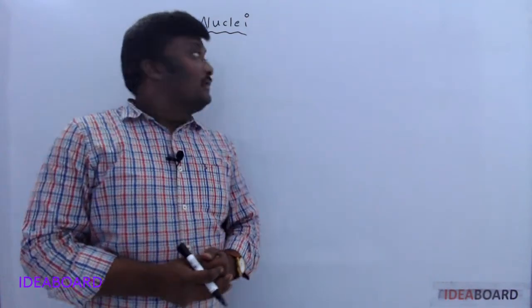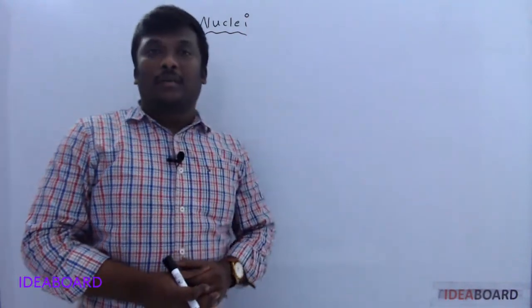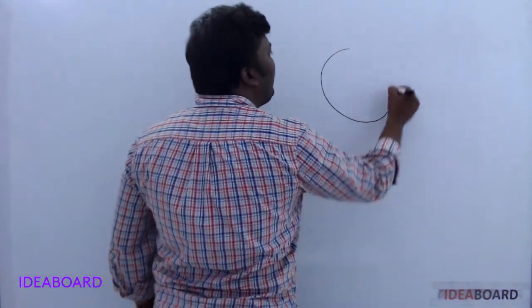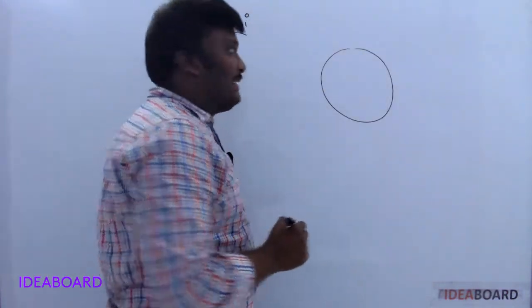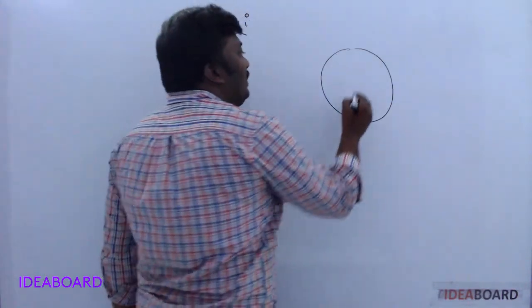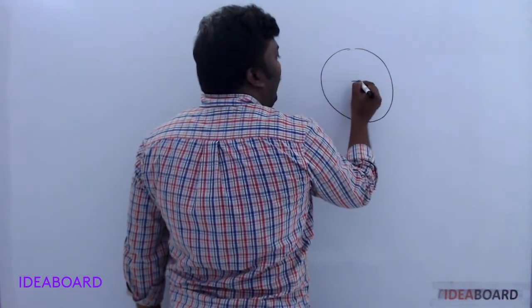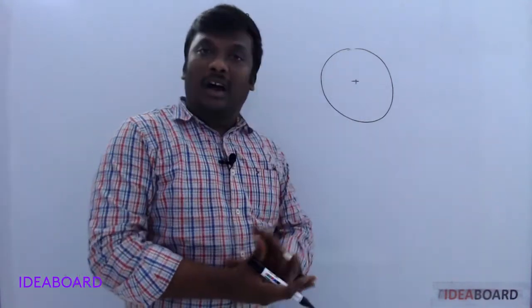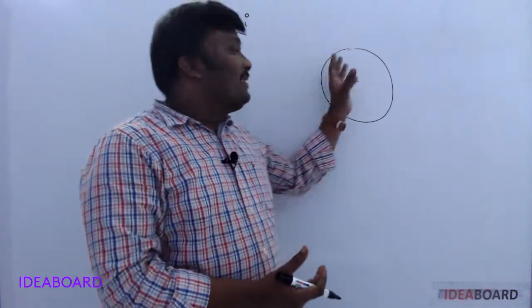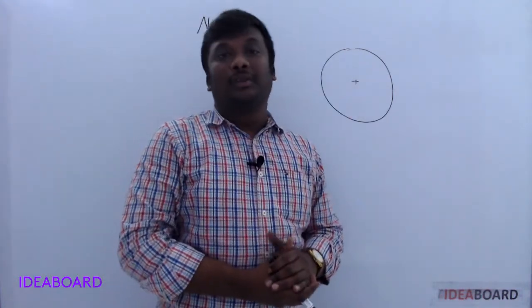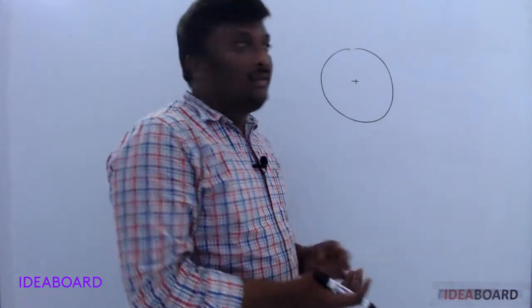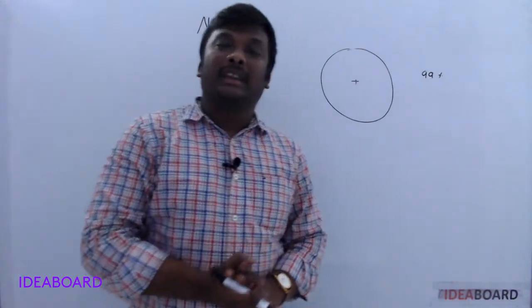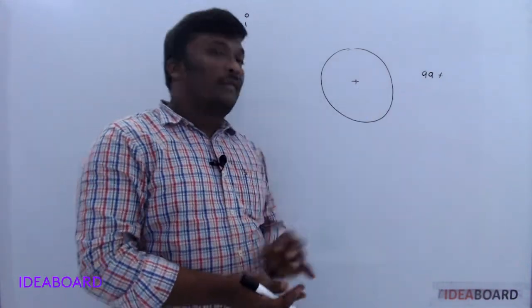In the previous chapters, we discussed about atoms. From Rutherford's alpha scattering experiment, we found that the entire positive charge is located at the center of the atom, called the nucleus, and the mass of the atom is mainly due to the mass of the nucleus — nearly 99% of the mass of the atom.